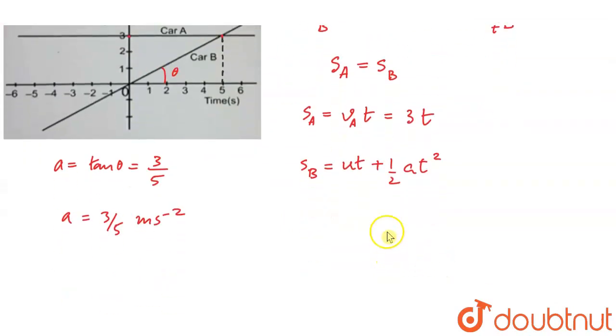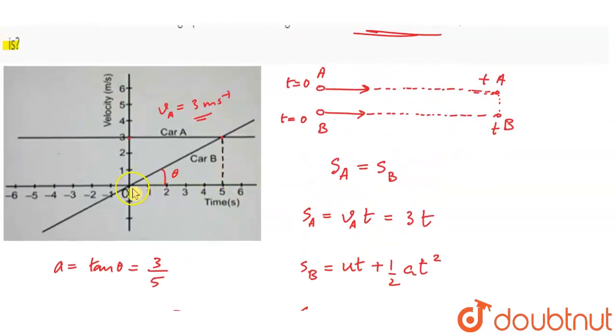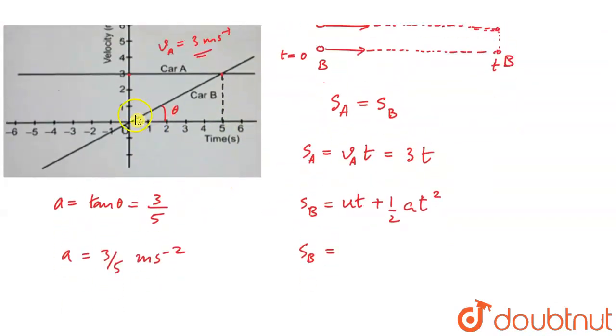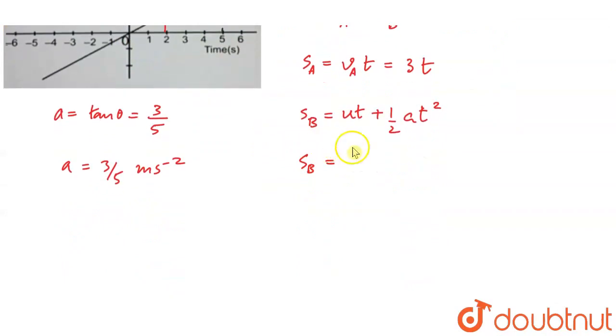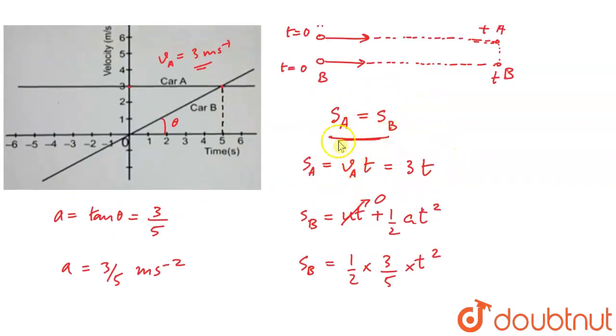Since u equals 0, we have s_B equals half a t squared. Substituting a equals 3/5, we get s_B equals (1/2) times (3/5) times t squared, which equals (3/10) t squared.